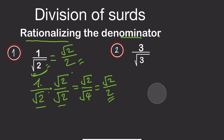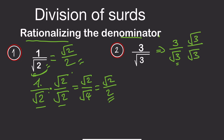We do the same with equation 2 — we rationalize the denominator. We have 3 over root 3. The denominator is root 3, so we multiply the numerator and the denominator by root 3.